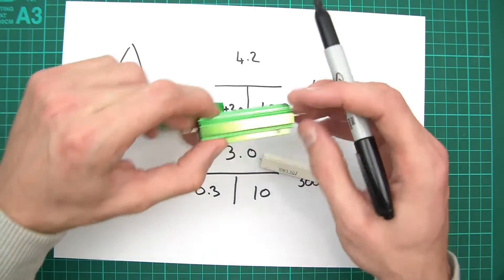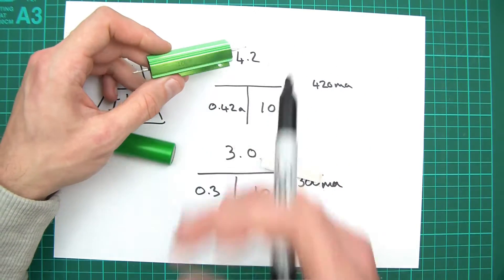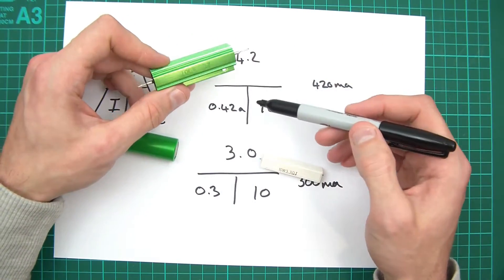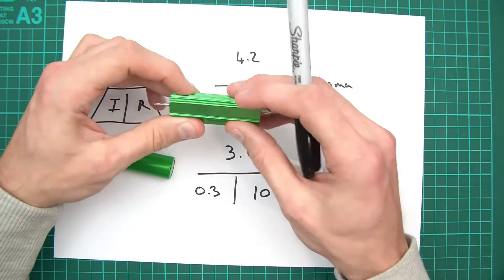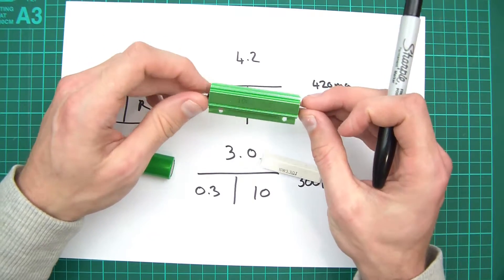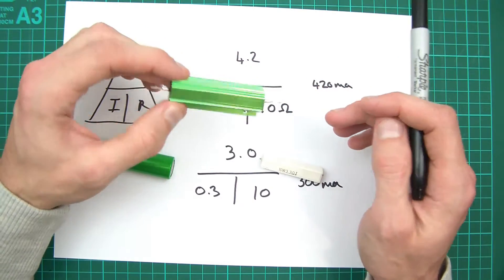Now, 1 ohm, again, it will be silly, because if I was to get 4.2 volts divided by 1, that's 4.2 amps. So this, when the cell is fully charged, would dissipate 4.2 amps of current, and that's just stupid. It's too much.